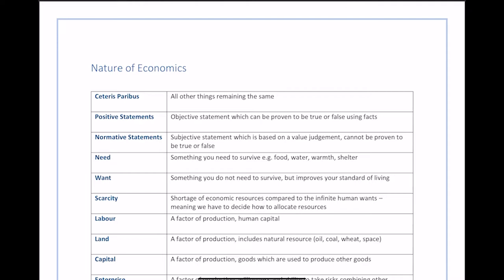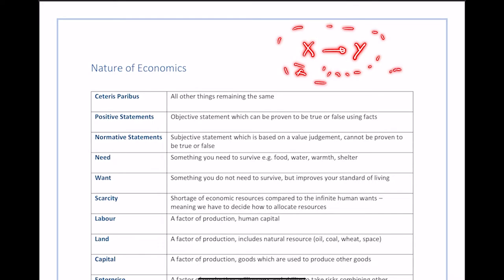The first thing you've probably heard of is something called ceteris paribus. Ceteris paribus means all other things remain the same. In economics, it can be quite difficult to understand how one economic theory affects the economy because changing one thing affects another, and so on. So we say ceteris paribus — if we make a change in one economic principle, we assume all other factors aren't affected, and we just look at how factor X affects factor Y, ignoring everything else.